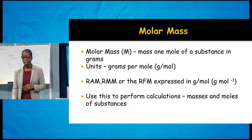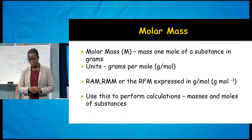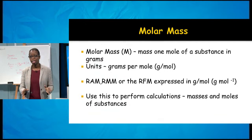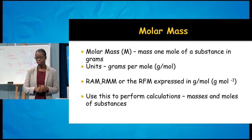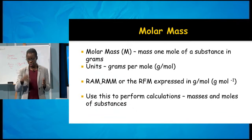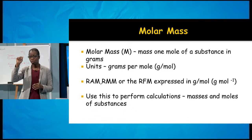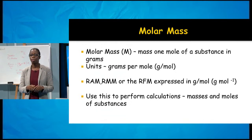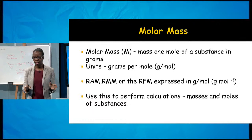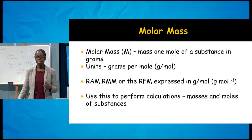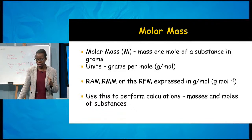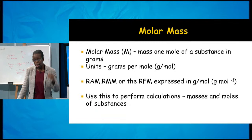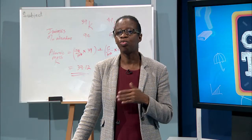Now let's look at molar mass — the mass of one mole of a substance. Since it is a molar mass, we measure it in grams, and the units are grams per mole (g/mol or g mol⁻¹). The relative atomic mass (RAM), relative molecular mass (RMM), and relative formula mass all have no units, but when expressed in grams per mole they represent the molar mass.